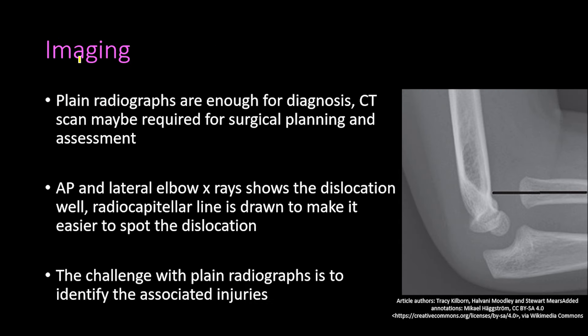The radial capitellar line is drawn to help spot the dislocation. On the lateral elbow X-ray, a line drawn through the center of the radius should pass through the center of the capitellum. If it does not — as shown here where it is displaced — there is a dislocation. The joint can also be seen to be non-congruent. The main challenge with plain radiographs is identifying associated injuries.